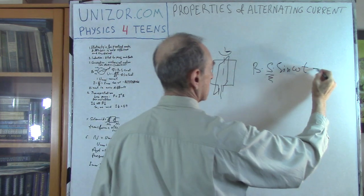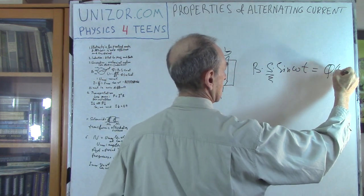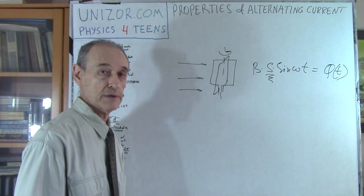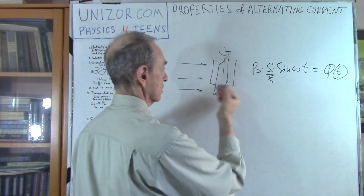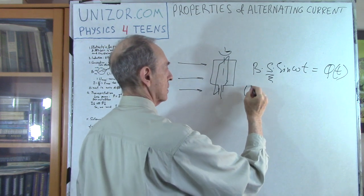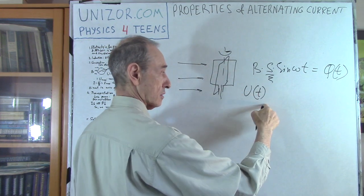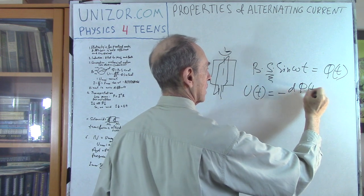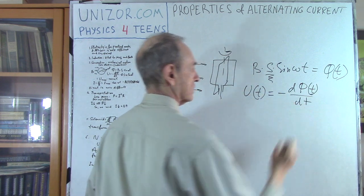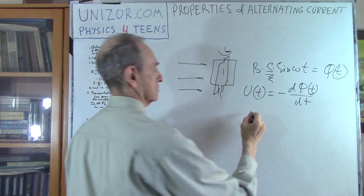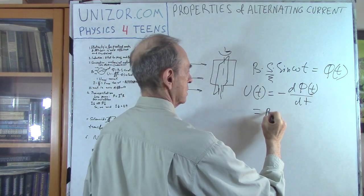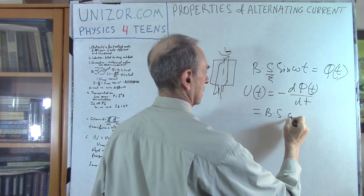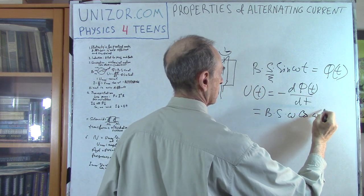We know that the generated EMF — electromotive force — actually the voltage in this case, also depending on time, is minus the derivative of the flux, which equals B·S·ω·cosine(ωt). So this is variable. As we are rotating our frame, that is exactly how electricity is produced by the power plant — they use whatever mechanics are available to rotate a frame in the magnetic field, or more practically, they rotate the magnetic field around the frame.